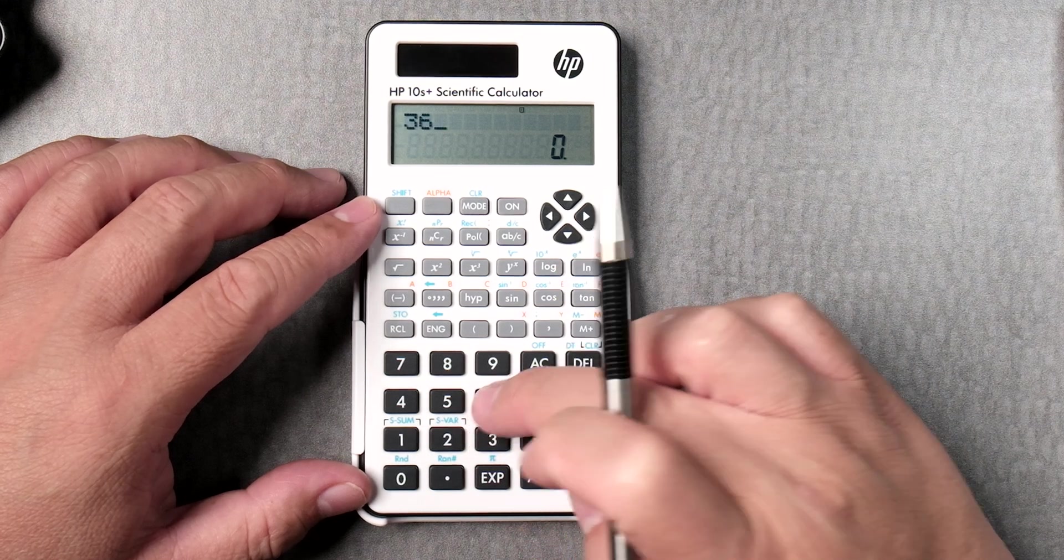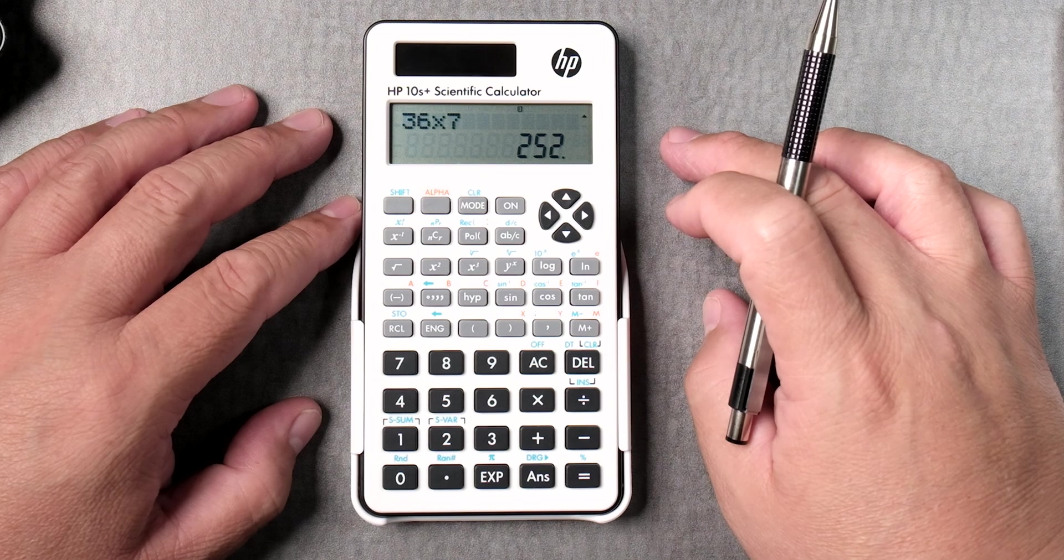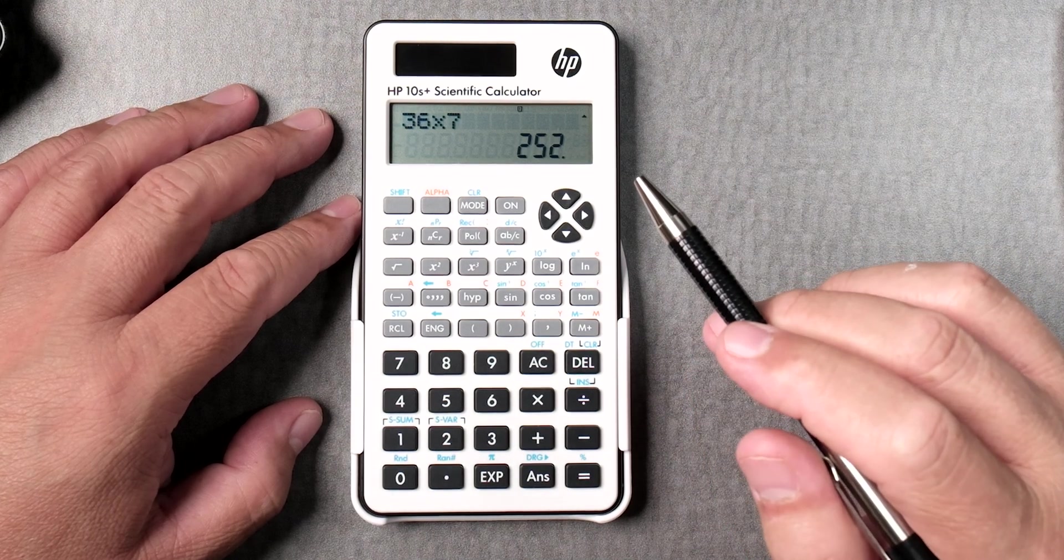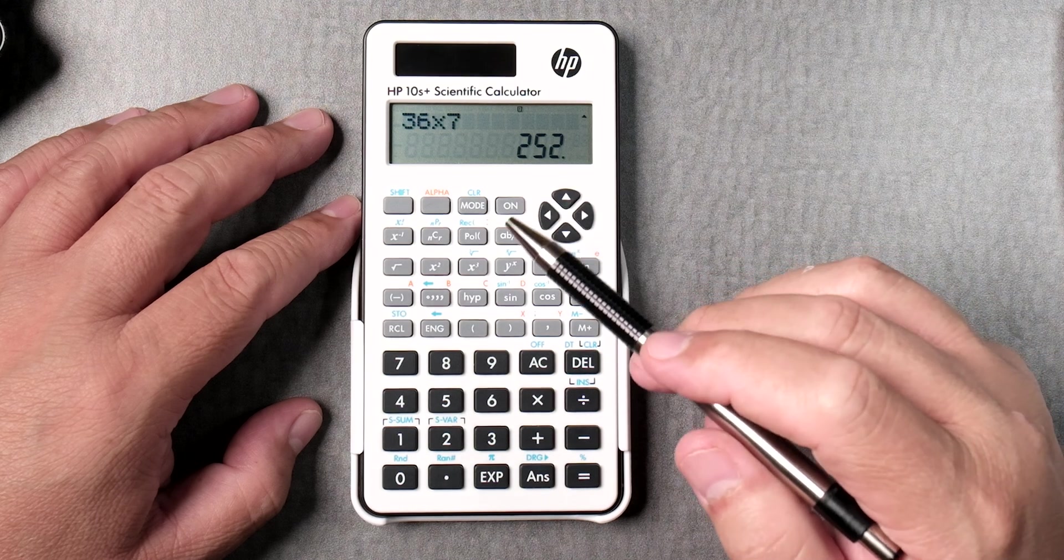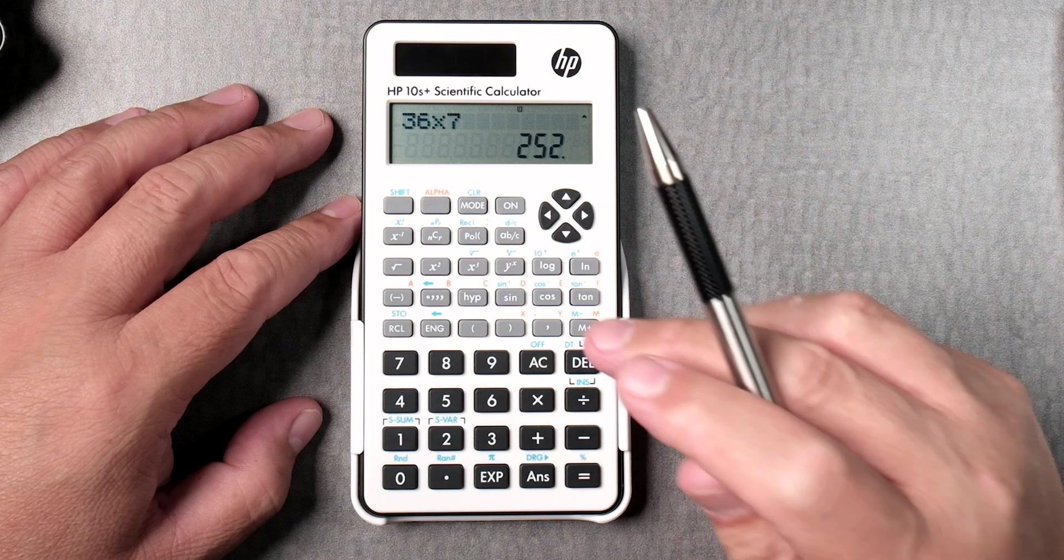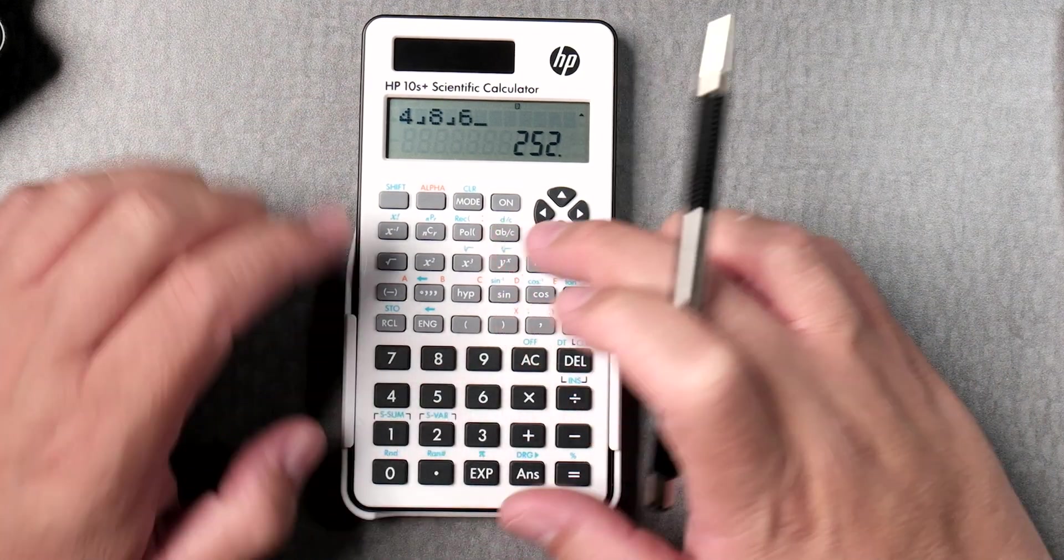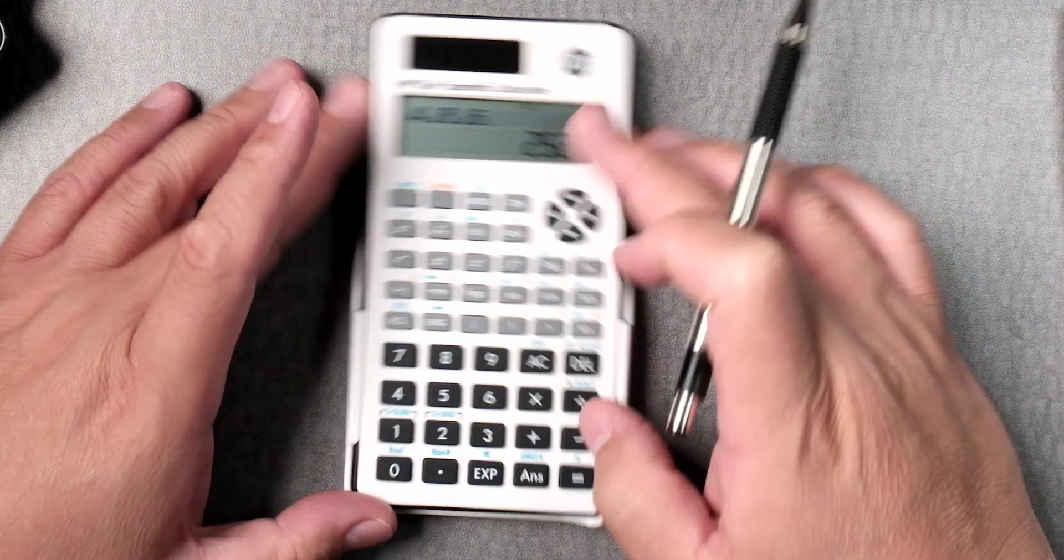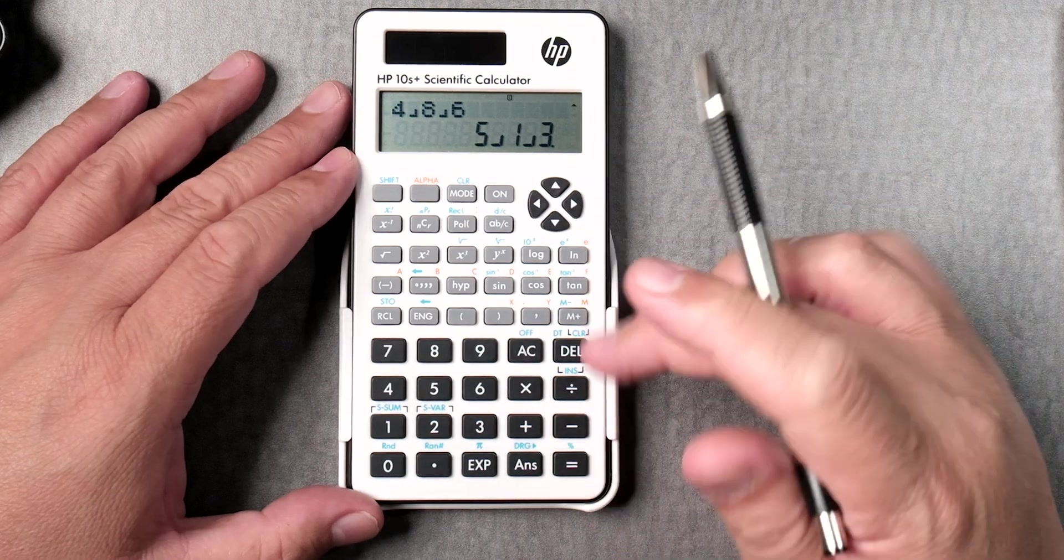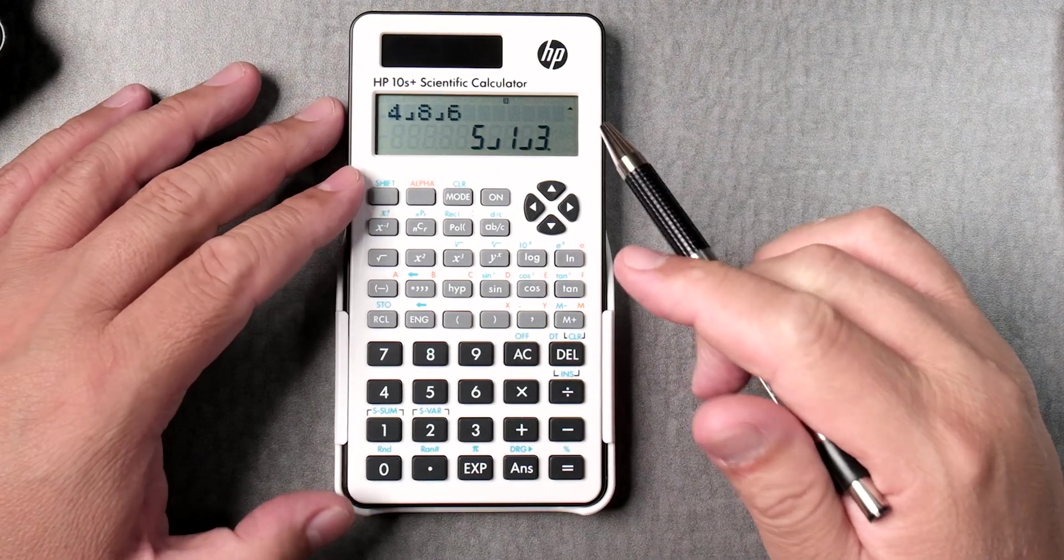You do something like 36 times 7, so it's algebraic, gives you an answer. I notice there is an a, b, c button here. So we can do 4, a, b, c, 8, a, b, c, 9. So 4 and 8, 6, right? Press equals, it gives you a more appropriate mixed number.